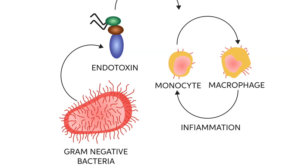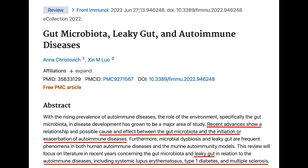Another thing worth considering when you have a leaky gut and histamine intolerance are LPS bacterial toxins. These are toxins made by gram-negative bacteria, and they can elicit a very strong immune system response, which in turn can damage the intestinal lining leading to a leaky gut. I often see these elevated LPS toxins with people who have autoimmune diseases, as well as those patients who have MCAS and histamine intolerance.